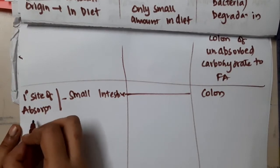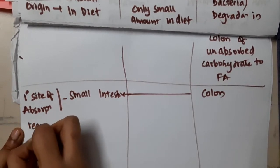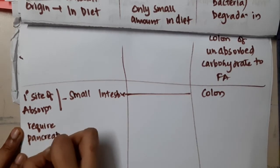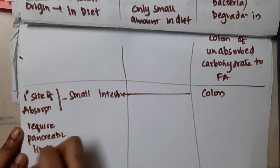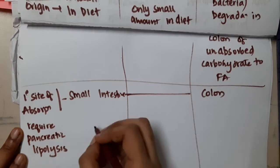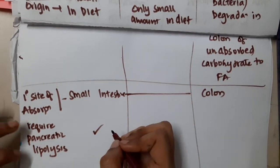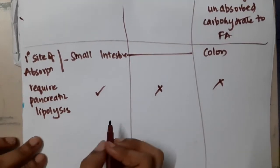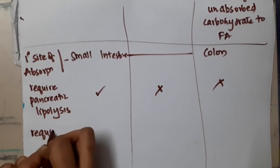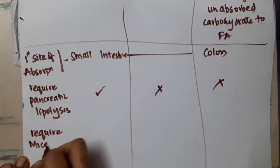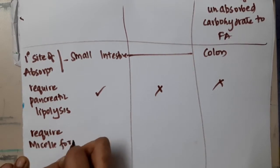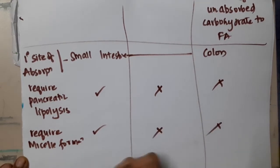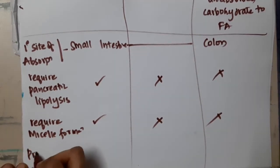Regarding pancreatic lipolysis: long chain fatty acids require pancreatic lipolysis, whereas medium chain and short chain fatty acids do not require pancreatic lipolysis. Similarly, long chain fatty acids require micelle formation, whereas medium chain and short chain fatty acids do not require micelle formation.